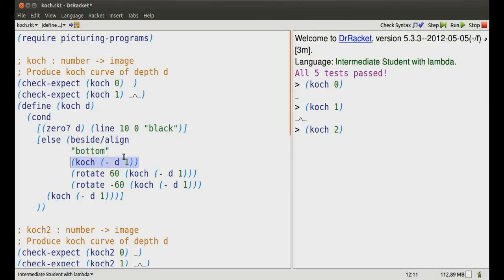The first one not rotated at all. The second one rotated backwards. The third one rotated forwards. And the fourth one not rotated at all. Here's what we get. Koch 2.